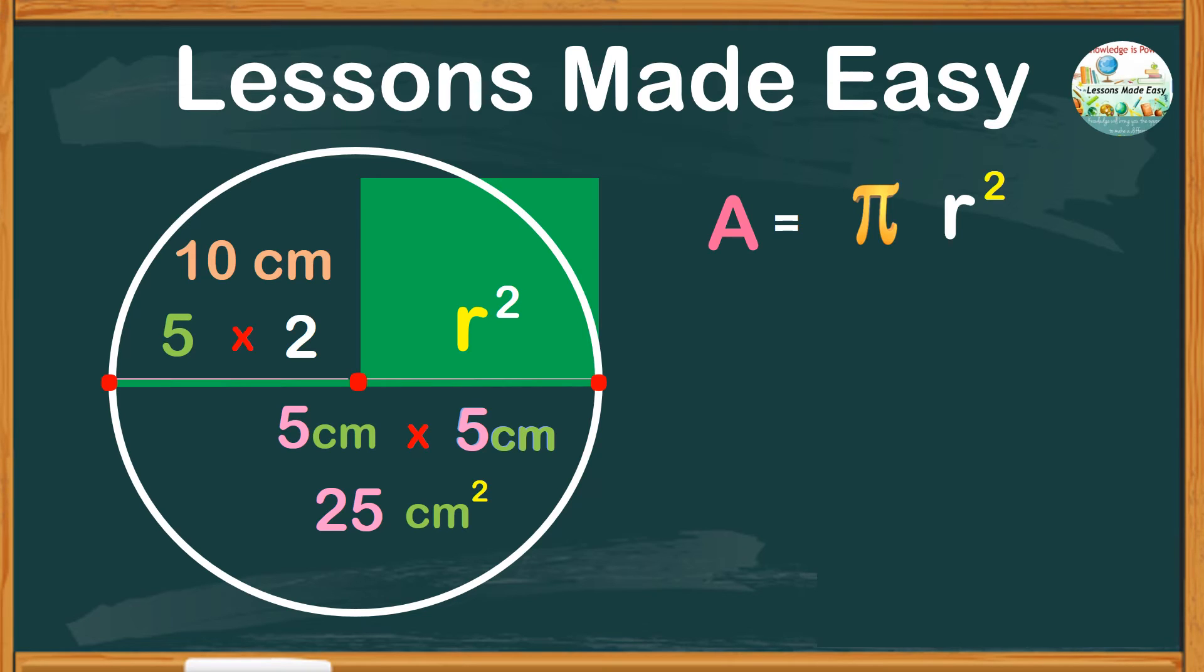All we need to do is substitute the values: area equals pi times the radius, which is 5 centimeters, squared. So area equals the value of pi, which is 3.14, times the product of 5 times 5, which is 25 square centimeters.